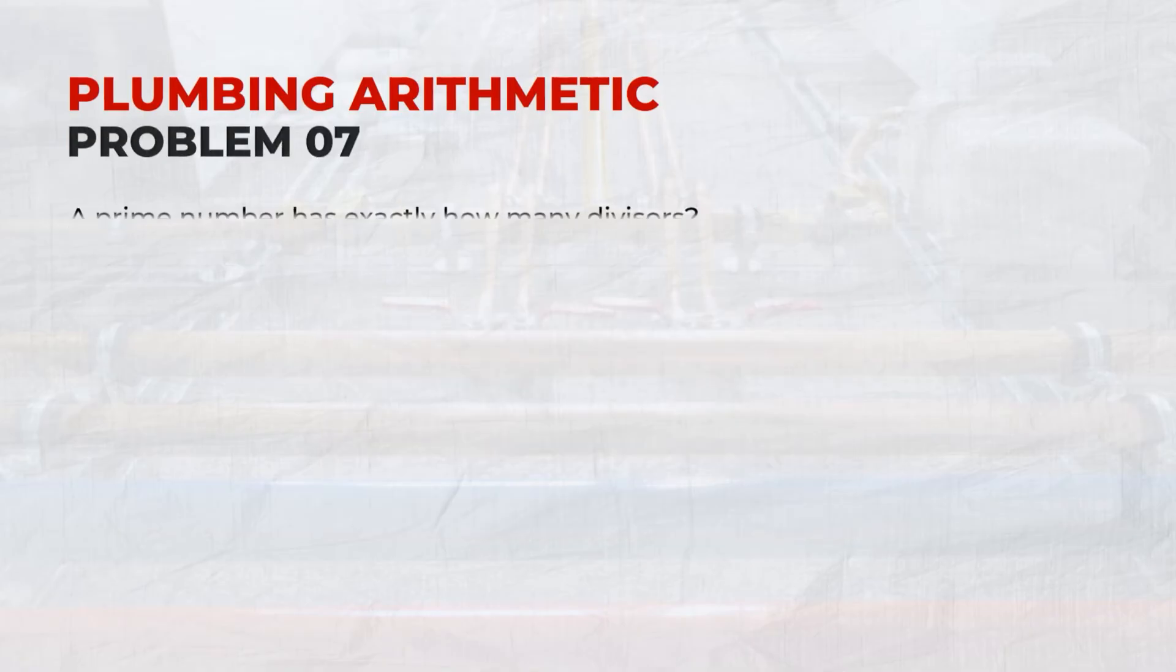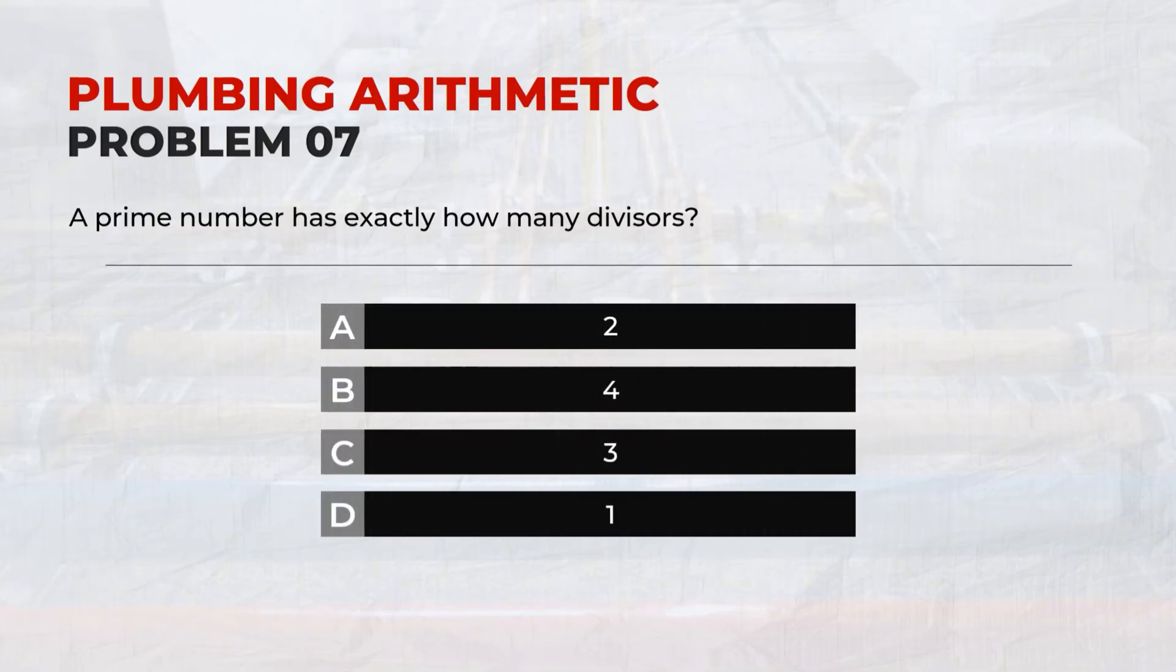Problem 07: A Prime Number has exactly how many divisors? Answer: A, 2.